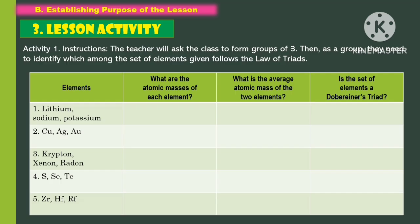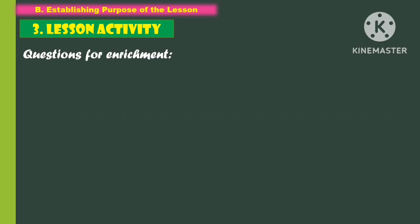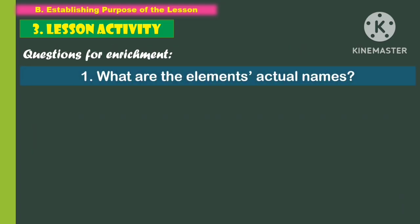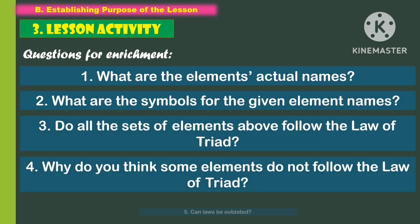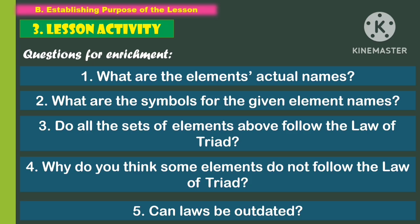For the lesson activity, students will accomplish Activity 1. The teacher will ask the class to form groups of three. As the group starts, they will identify which among the set of elements given follow the Law of Triads. Afterward, students will answer enrichment questions: first, what are the elements' actual names? Second, what are the symbols for the given element names? Third, do all the sets of elements above follow the Law of Triads? Fourth, why do you think some elements do not follow the Law of Triads? And fifth, can laws be outdated?